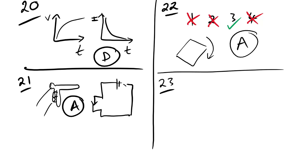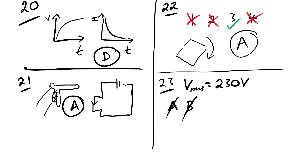Question 23: mains electricity is 230 V. What is correct? The mean voltage is zero (not 163 V — 230 V is the RMS). 230 V is the RMS, not the peak. The RMS is not 325 V (that would be larger than the peak). The peak voltage is 230 × √2 ≈ 325 V, making peak-to-peak 650 V. Answer is D.